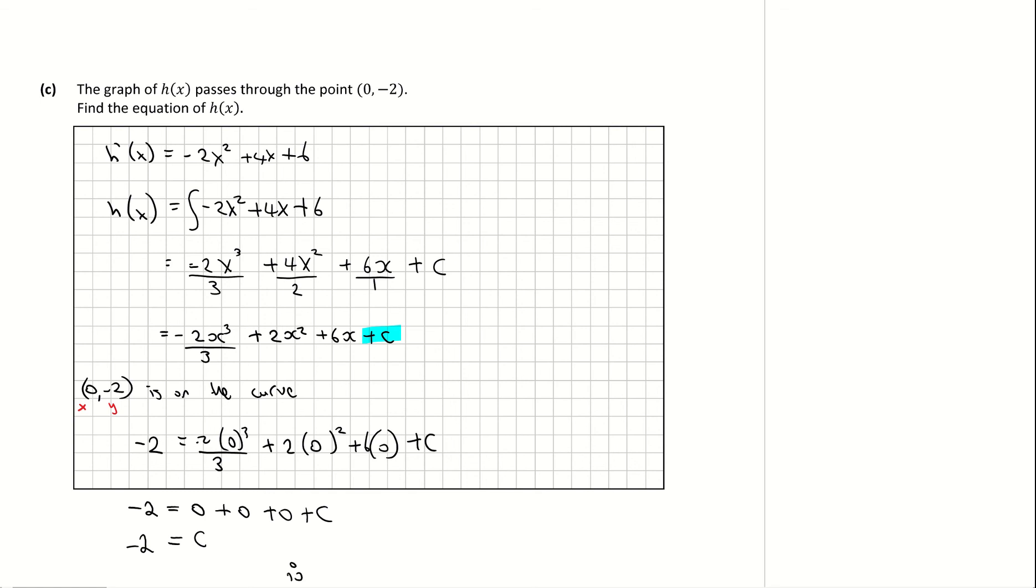So therefore, my function, my equation of h(x), is equal to -2x³/3 + 2x² + 6x + my constant, which is -2. And that's our answer to part C. And that is the solution to question 6.